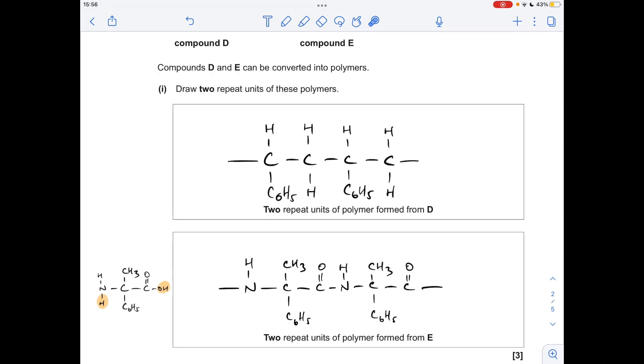And the polymer formed from compound E, I've just illustrated it here. So we take a hydrogen from the NH2 group and the OH from the carboxyl group, obviously that's going to form a water molecule, but it enables you to join the monomers together, and you would get that for two repeat units.